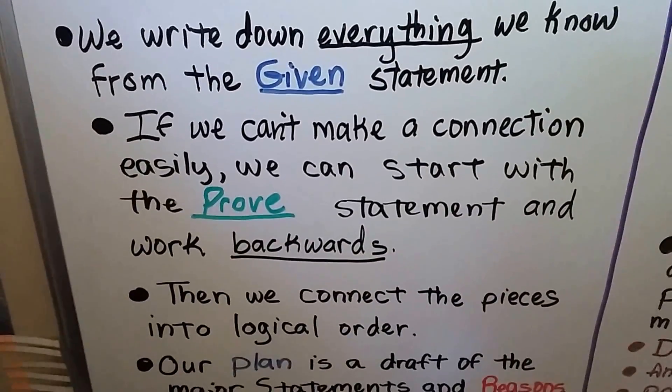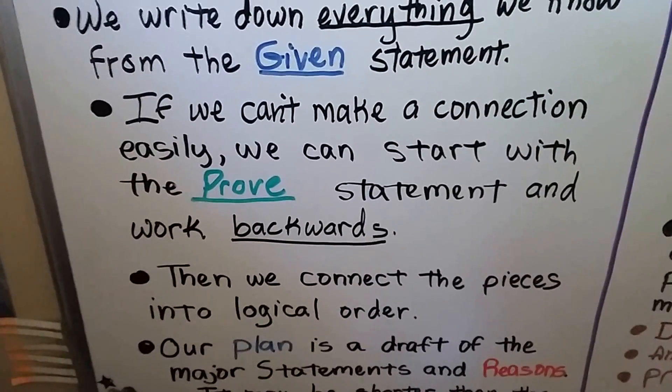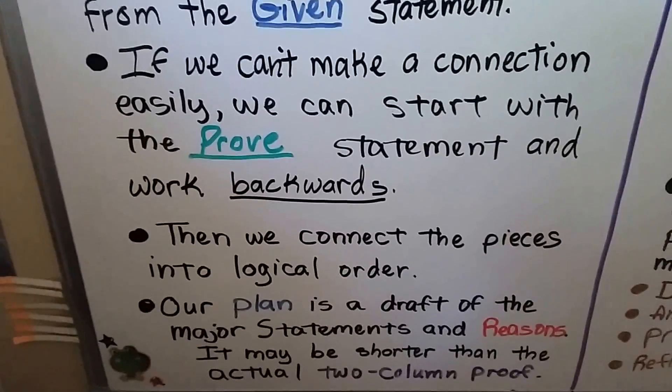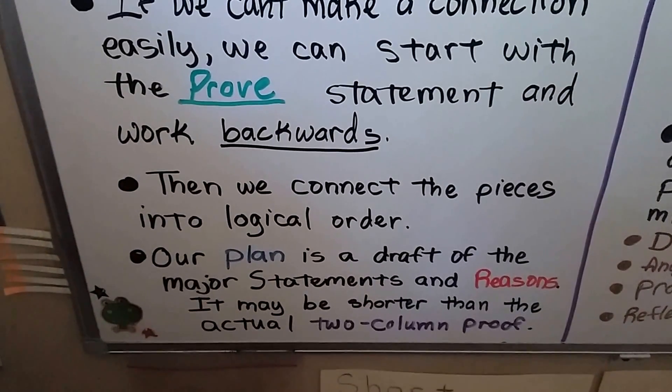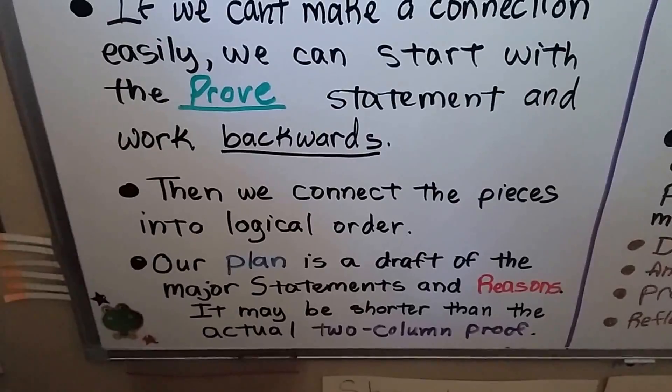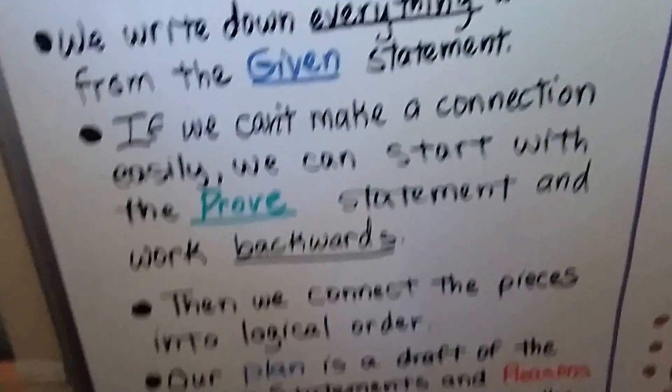We write down everything we know from the given statement. If we can't make a connection easily, we can start with the proof statement and work backwards. Then we can connect the pieces into logical order. Our plan is a draft of the major statements and reasons, and it may be shorter than the actual two-column proof. It's just a plan.